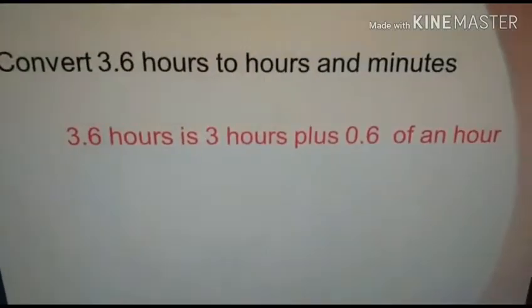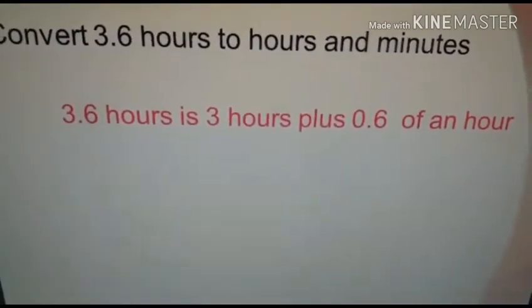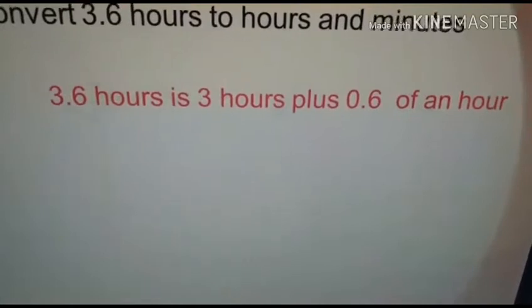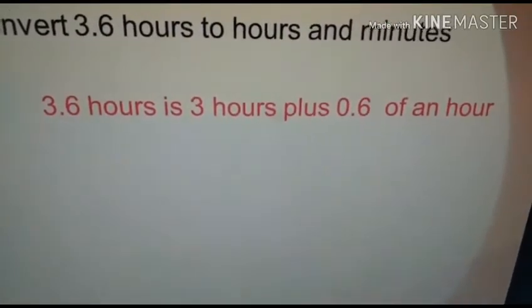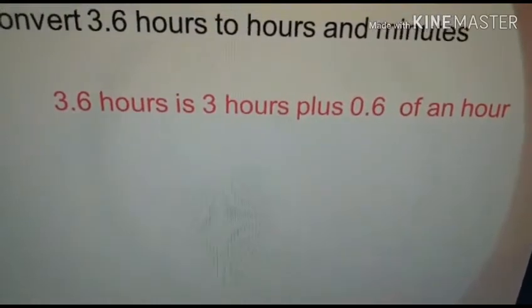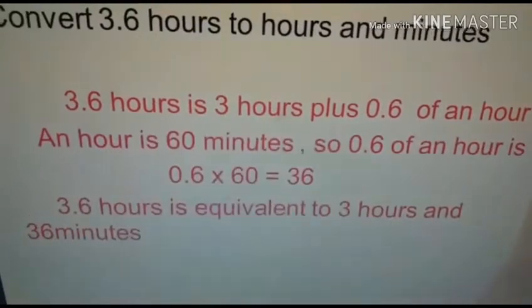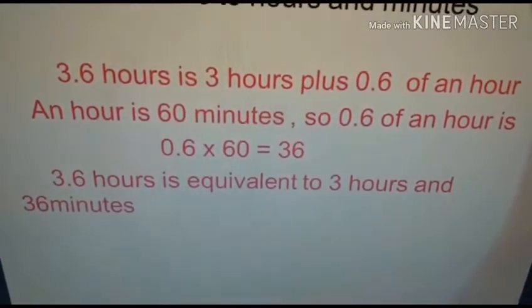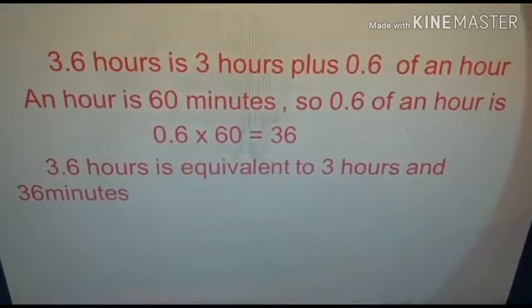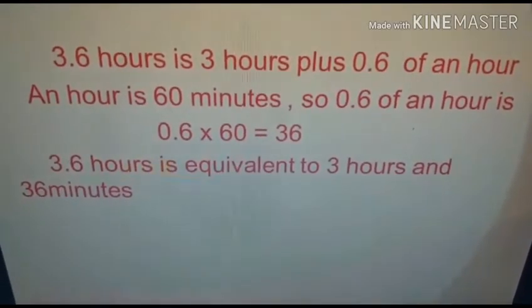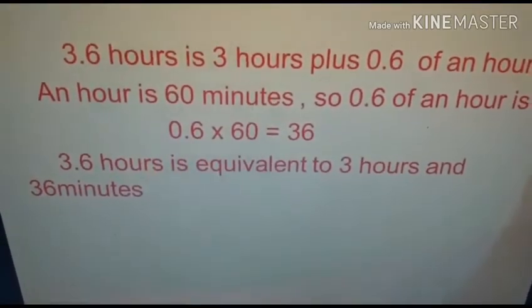Now, look at the next question. Convert 3.6 hours to hours and minutes. 3.6 hours is same as 3 hours plus 0.6 of an hour. We want to find out how many minutes. 0.1 hour is 60 minutes, so 0.6 of an hour is 0.6 multiplied by 60. It is 36, so 3.6 hours is equal to 3 hours and 36 minutes.